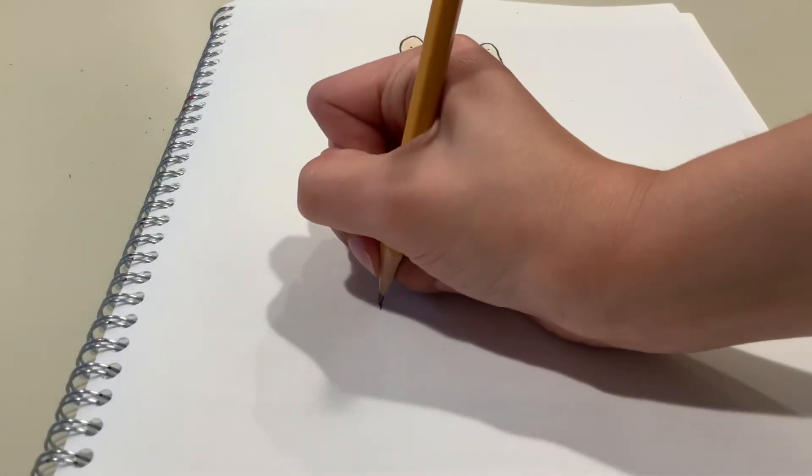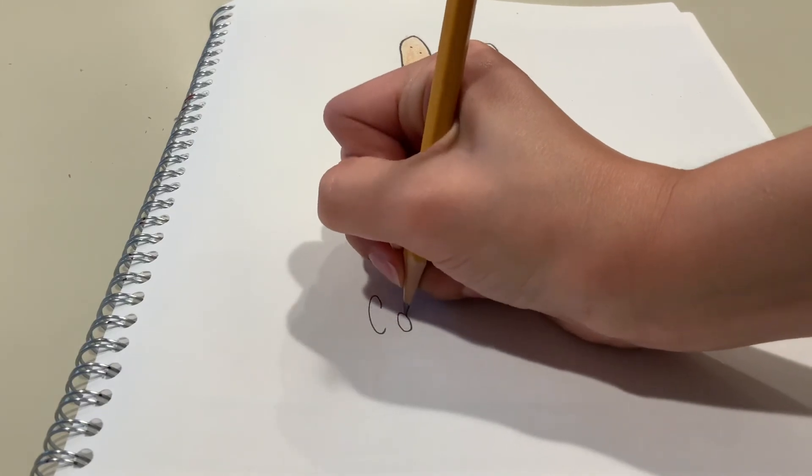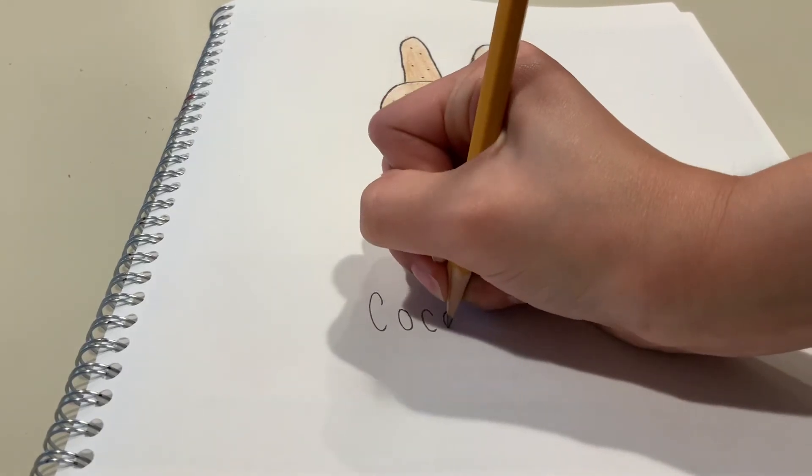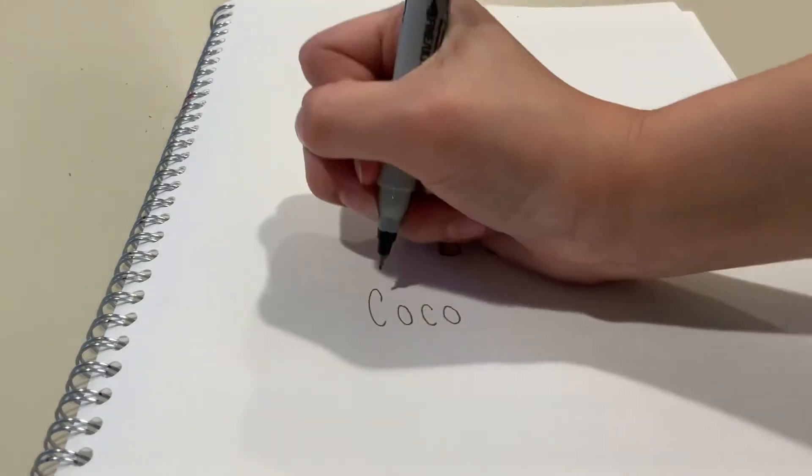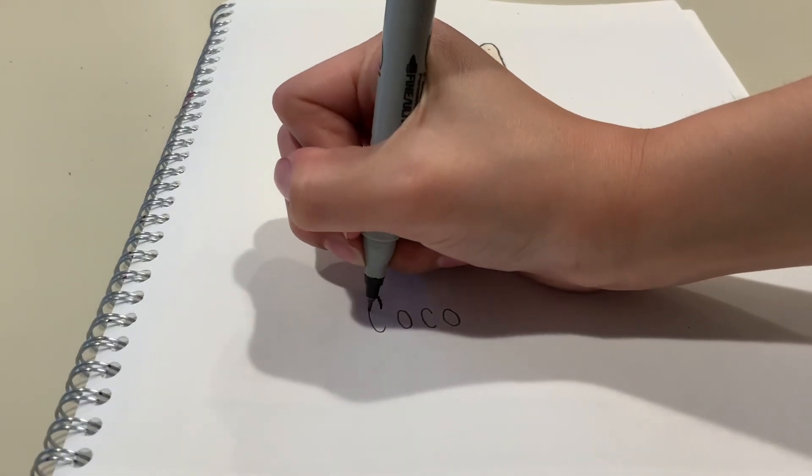And that is the end of the drawing. So now I'm just going to write her name at the bottom. And I'm just going to trace that with sharpie.